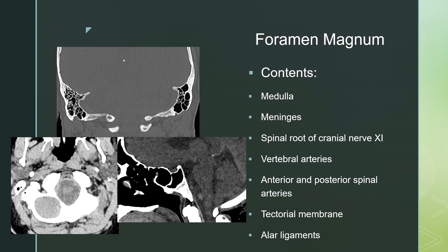Foramen magnum is a large defect within the occipital bone. It transmits the medulla, the meninges, the spinal root of cranial nerve 11, both vertebral arteries, the anterior and posterior spinal arteries, the tectorial membrane, and the alar ligaments. It's easiest to find because it's the biggest hole in the skull base. Here it is on the axials, and here it is on the sagittals.